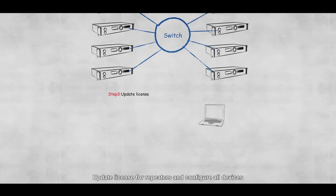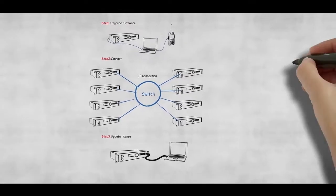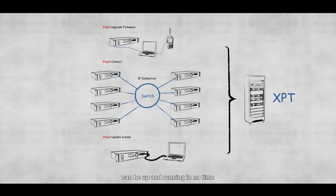Third, update license for repeaters and configure all devices. By following these simple steps, the Hytera XPT digital trunking system can be up and running in no time.